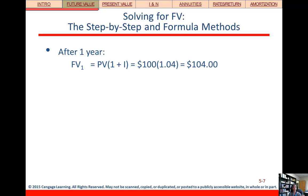it's going to be $100 times 1.04 because we've got 4% interest rate and we know we're going to at least have our $100. So that's where the one comes in and the .04 is the interest that we're getting. So at the end of the first year, we'll have $104.